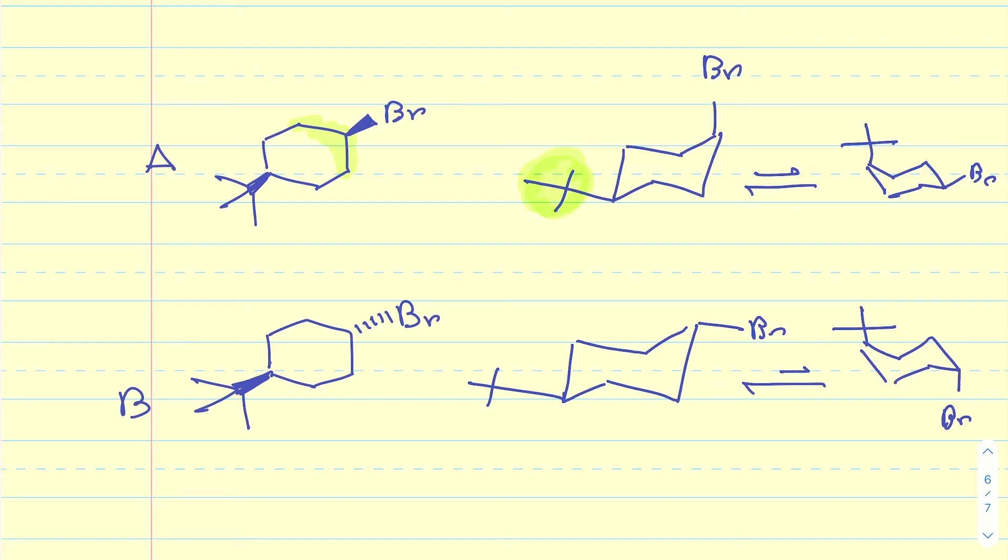Alright, so let's first of all figure out which one of these two conformations for each compound is going to be more stable. Obviously because of the fact that t-butyl is so large of a group, it's important for that to be equatorial. It's much bigger than bromine, so it's much more of a concern for that to be in the equatorial position.